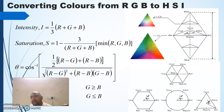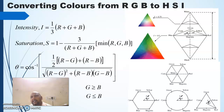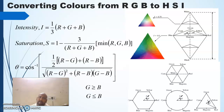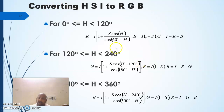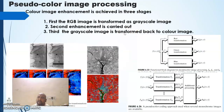When working with different models, there are situations where you need to convert from one model to another. For displaying, we use the RGB model; for printing, we move to the CMYK model; for analysis, we move from RGB to the HSI model. To convert from RGB to HSI, specific formulas are used, and to convert back from HSI to RGB, corresponding formulas are applied.